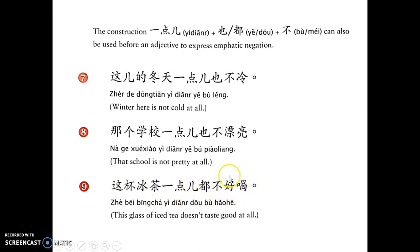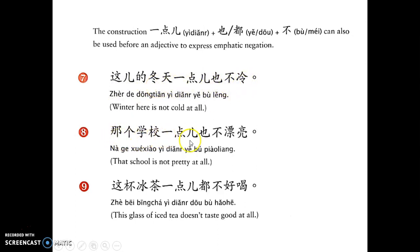这杯冰茶一点都不好喝 — 好喝 is an adjective meaning 'tastes good when you drink it'. So 这杯冰茶一点都不好喝 means it does not taste good at all. If you can grasp the pattern of this structure, it won't feel very hard. The pattern is: put 一点 or a measure word expression, then 也 or 都, then 不. So 一点也不 or 一点都不 go together.